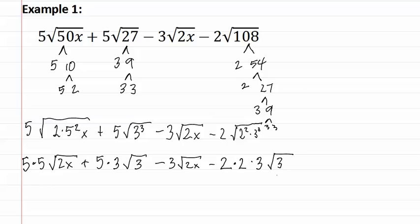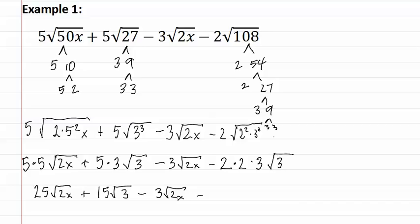Now we must multiply the numbers out front of each of these radicals. This gives us twenty-five root two x, plus fifteen root three, minus three root two x, minus twelve root three.